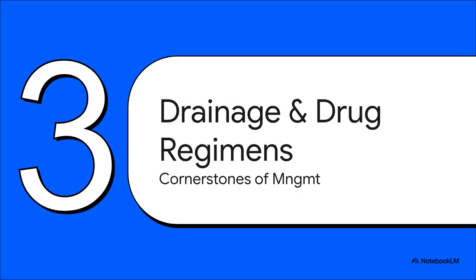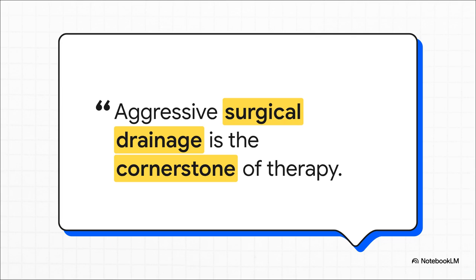We've identified the enemy — so how do we actually treat this? Management really stands on two pillars, and you absolutely need both of them: aggressive surgical drainage and smart, targeted antimicrobial therapy. I want you to let this sink in. Antibiotics are vital, but they are not the primary treatment — they are an adjunct therapy. Why? Because antibiotics have a really hard time penetrating a thick, walled-off collection of pus. The source of the infection has to be physically removed. Aggressive surgical drainage is the absolute, unequivocal cornerstone of therapy. Without it, the infection just won't clear.